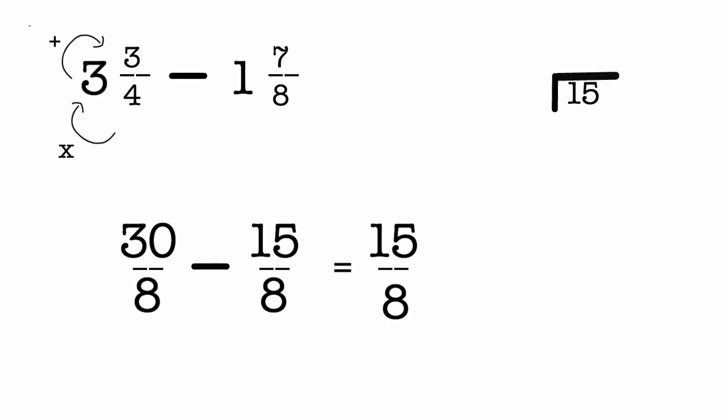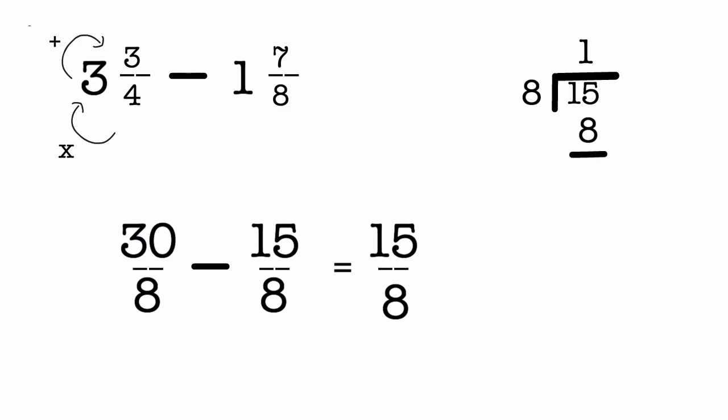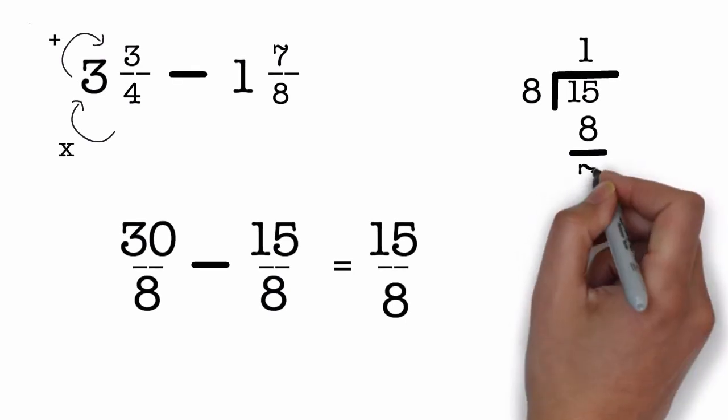So we have 15 divided by 8. 8 goes into 15 one time. 1 times 8 is 8. And if we subtract 8 from 15 we get 7.